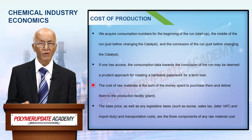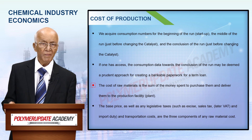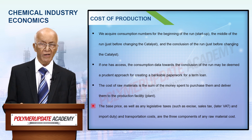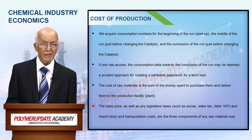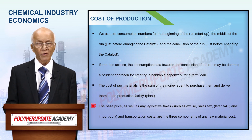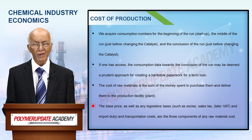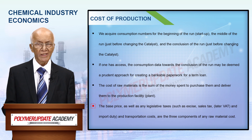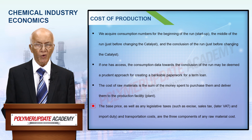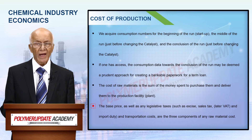The price of raw material consists of the money we spend to buy and deliver them to the manufacturing site or plant. The three components of any raw material cost therefore consist of: the basic price, the statutory duties as and when applicable such as excise, sales tax, and import duty, and the transportation charges.